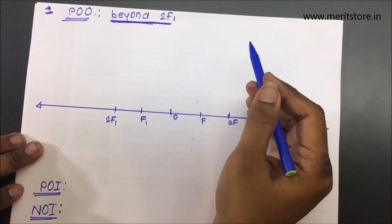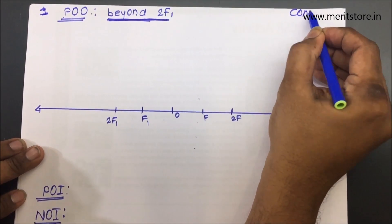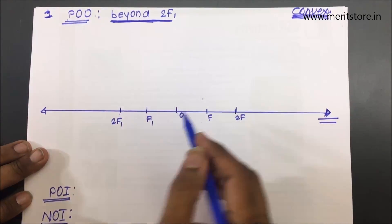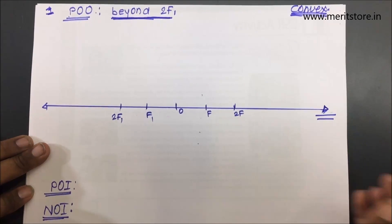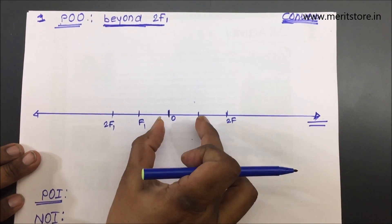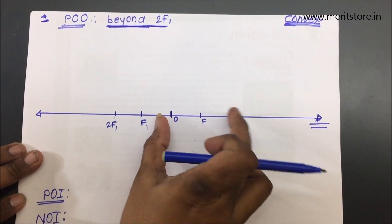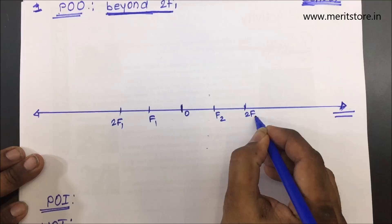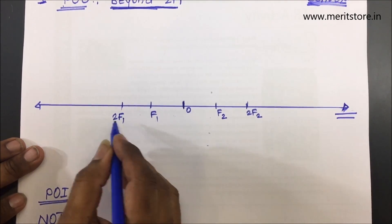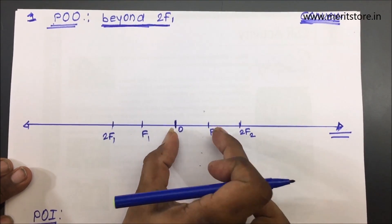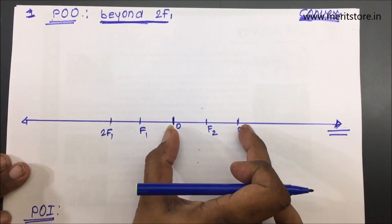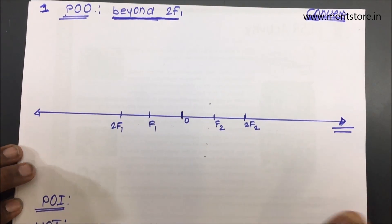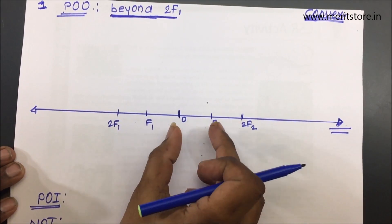The first ray diagram is about the convex lens, placing the object beyond 2f1. On the principal axis, we identify the optical center, then f1 and 2f1 on the left side, and f2 and 2f2 on the right side. So we have the optical center, focus, and double the focus on both sides.